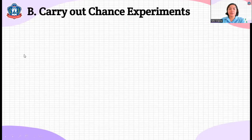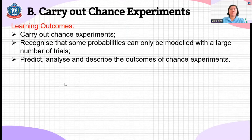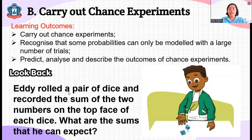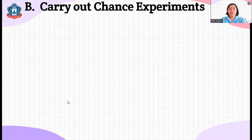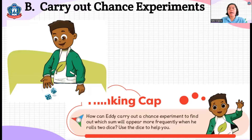Now let's go to Lesson B: Carry Out Chance Experiments. Eddie rolled a pair of dice and recorded the sum of the two numbers on top. For example, if the first die shows three and the second shows one, the sum is four. How can Eddie carry out a chance experiment to find out which sum will appear more frequently when he rolls two dice? We will try that during our class.